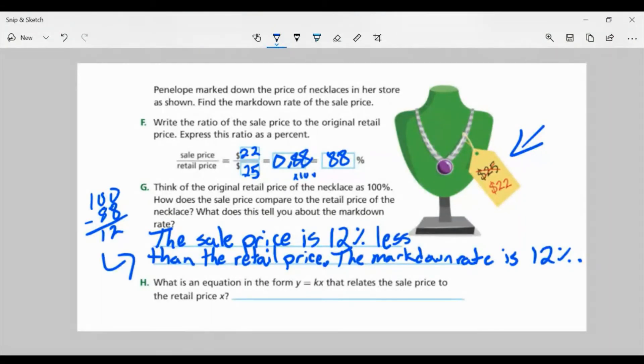Part H, what is an equation in the form Y equals KX that relates the sale price to the retail price X? Well, we know the rate is 0.88. So we would plug that in for K, that's our constant of proportionality, like we covered in the previous lessons.